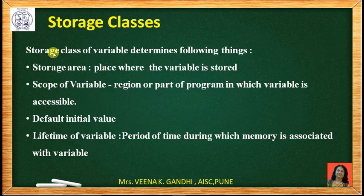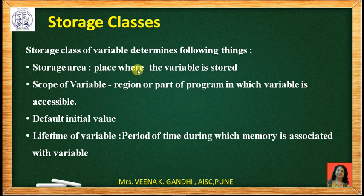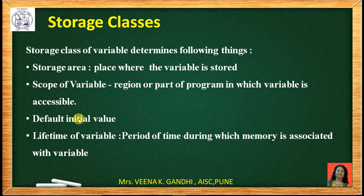The storage class of a variable determines the following things: first, storage — meaning the place where the variable is stored, which can be main memory or a register. Second, scope — the region or part of the program in which the variable is accessible. Third, the default initial value of the variable. And fourth, the lifetime — the period of time during which memory is allocated for the variable.